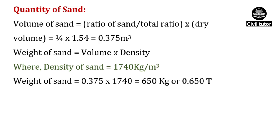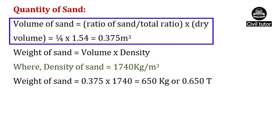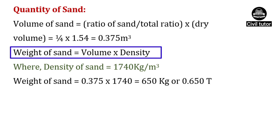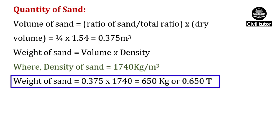Volume of sand is calculated using the formula: ratio of sand upon total ratio into dry volume. Ratio of sand for M25 grade of concrete is 1, total ratio is 4, and dry volume is 1.54. Substituting, volume of sand equals 0.37 meter cube. Weight of sand equals volume into density, where density of sand is 1,740 kg per meter cube, giving a weight of sand of 650 kg.